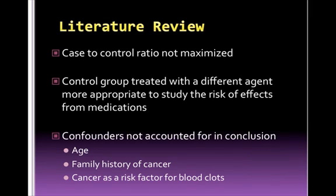Now let's review potential flaws in the design and interpretation of the findings of this study. The case control ratio was not maximized as it only used a one-to-one match. The control group with no blood clots would have been more appropriate to study the risk of developing a blood clot rather than as a comparison group for a medication effect. These patients did not have a blood clot and therefore have different risk factors than patients who have experienced a blood clot; the use of clodostrapsin was not the only variable that was different. It would have been more appropriate to select a control group that had developed a blood clot but was treated with a different agent. Several confounders were not accounted for in the conclusion, including age and family history of cancer. Cancer is also an independent risk factor for a blood clot, and this was not included in the study.